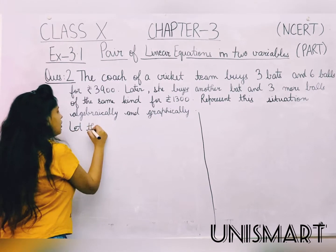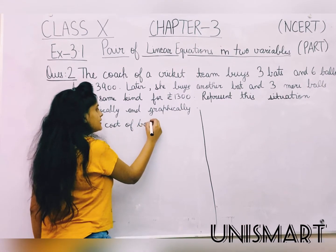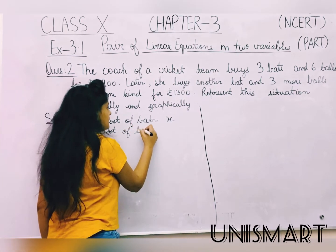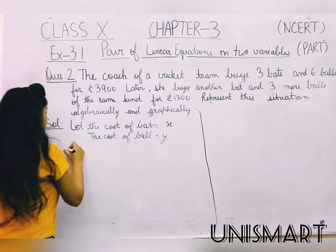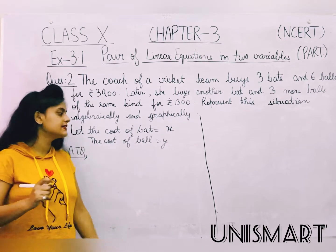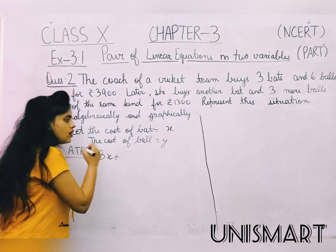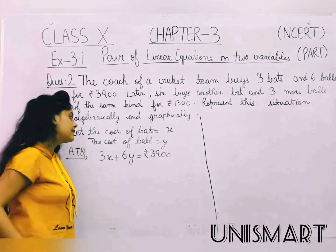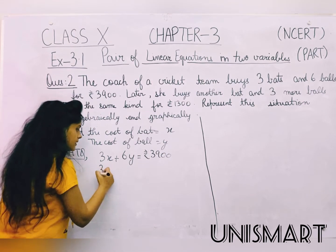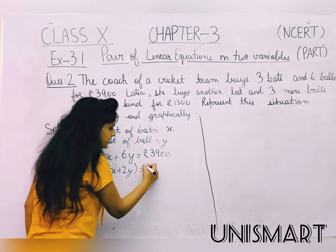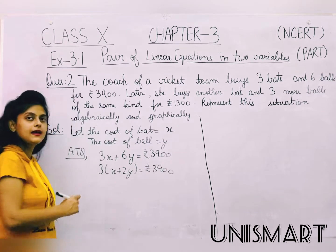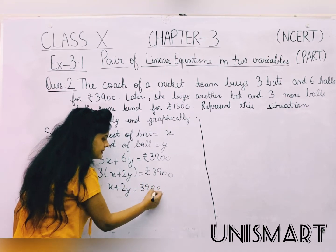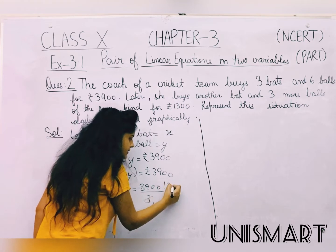Let the cost of bat be x and the cost of ball be y. So three bats and six balls equal 3900 rupees gives us 3x plus 6y equals 3900. We can see three is a common factor, so dividing both sides by three gives us x plus 2y equals 1300. So my first equation is x plus 2y equals 1300.